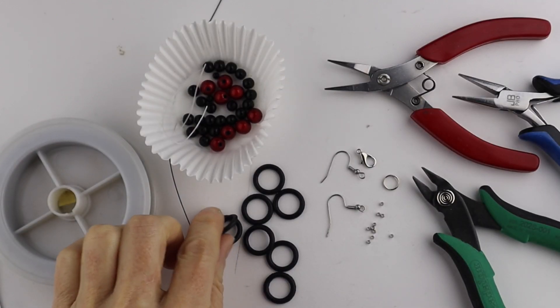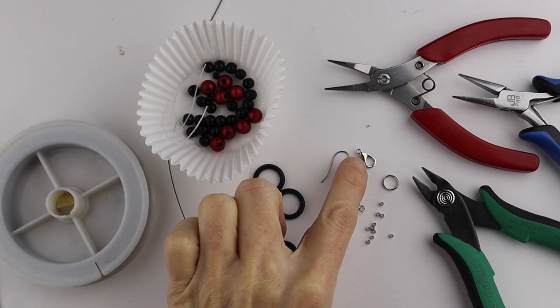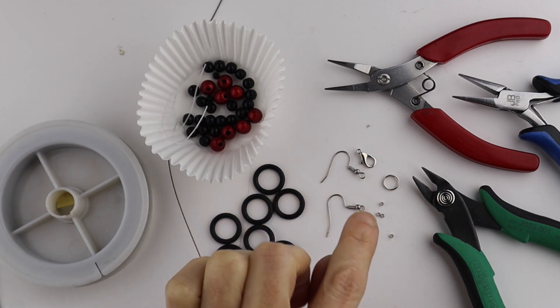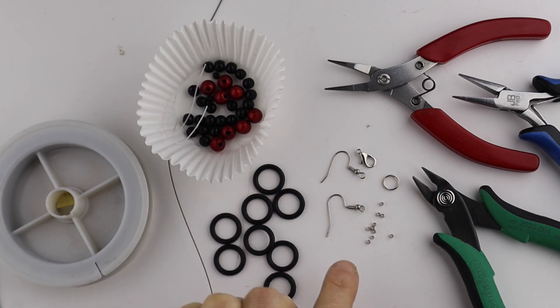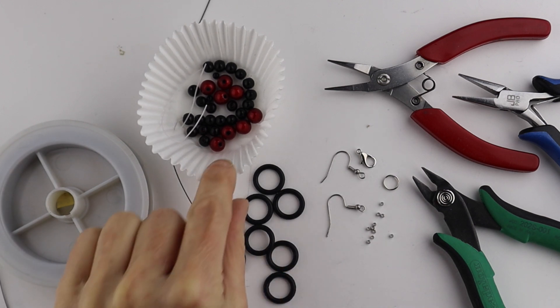I'm using five-eighths inch O-rings, earring hooks, a hook and split ring for the bracelet clasp, some 2 millimeter smooth crimps, and black Tiger Tail.